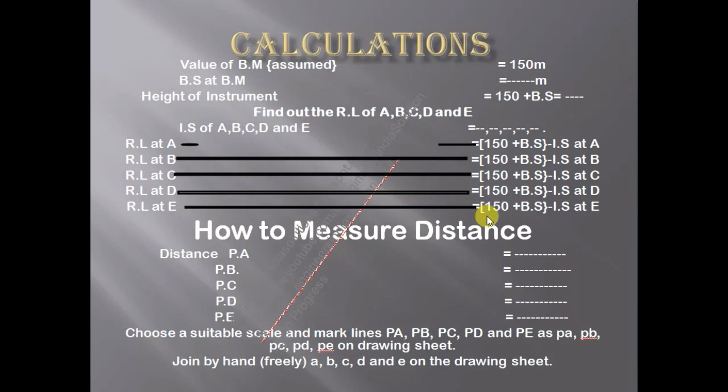How do we measure the distances? The distances are simply measured by PA, then you have PB, then PC, then PD and so on. It will go on.